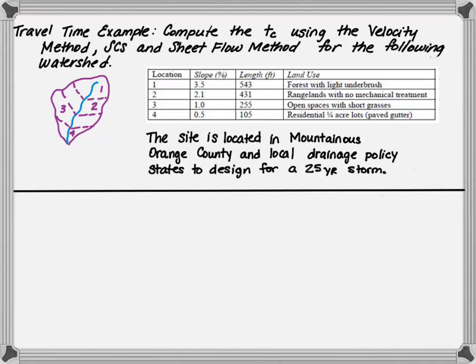In each one of these sites, locations 1, 2, 3, and 4, you're provided a slope, a length, and a land use. The site is located in the mountainous area of Orange County and the local drainage policy states to design for a 25-year storm.